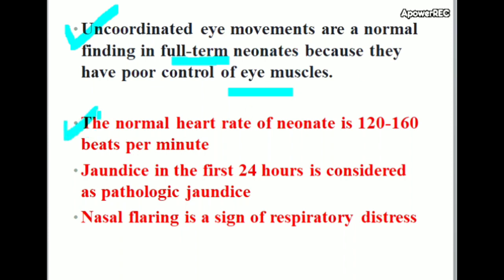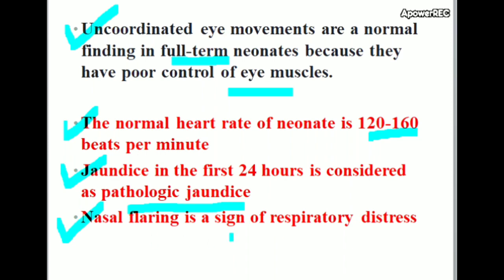The normal heart rate of a neonate is 120 to 160 beats per minute — the option given of 90 beats per minute is abnormal. Jaundice in the first 24 hours is considered pathologic jaundice. Nasal flaring is a sign of respiratory distress.